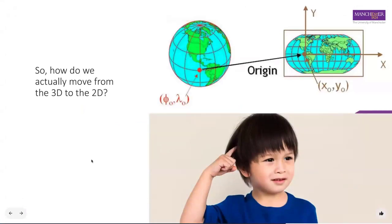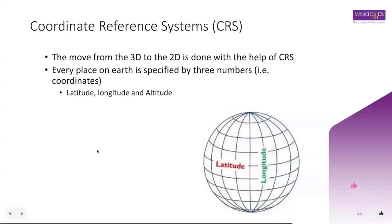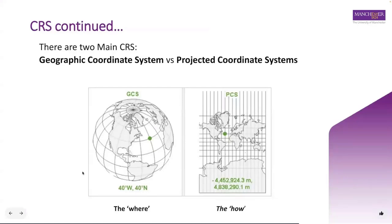So how do we actually move from 3D to 2D? This is where we talk about coordinate reference systems. Coordinate reference systems exist within projection methods. The move from 3D to 2D is done with the help of a CRS, where every place on Earth is specified by three numbers: latitude, longitude and altitude. Each number indicates the distance between a point of interest and a fixed reference point, also known as the origin. There are two main coordinate reference systems: the geographic coordinate system and the projected coordinate system.